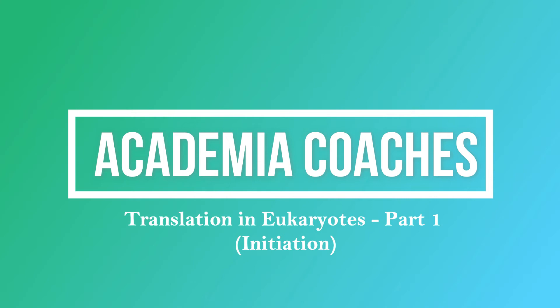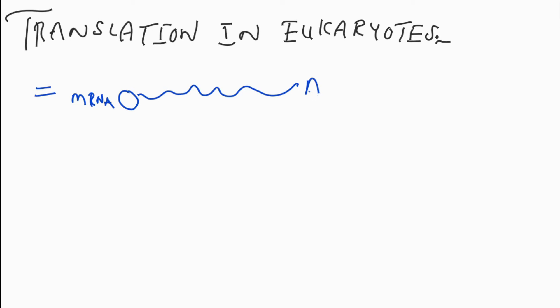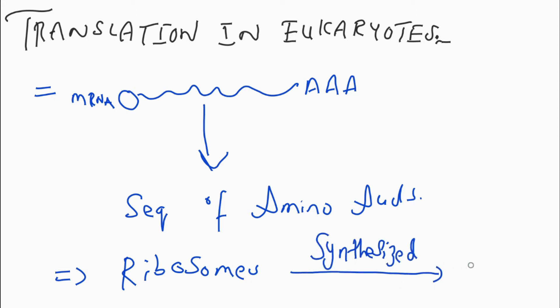Welcome to Academia Coaches. Today I am going to discuss the process of translation, that is protein synthesis in eukaryotes. Translation involves translating the sequence of messenger RNA to a sequence of amino acids. It is also known as the process in which ribosomes in the cytoplasm or endoplasmic reticulum synthesize proteins after the process of transcription.